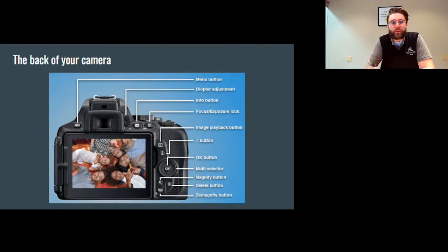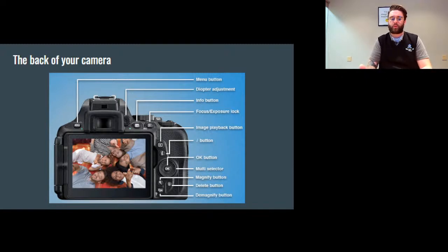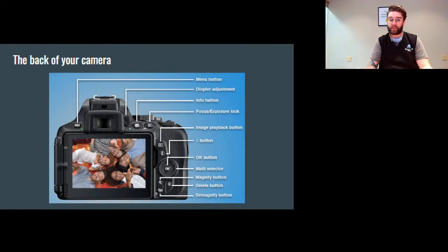Going to the back of the camera, we have the menu button. The menu button takes you through things like white balance, exposure, and save settings. Basically, anything not directly associated with the shutter speed, ISO, and f-stop will be within the menu button. It's important to learn your menu button and where things exist within it so you can change and go about things differently.